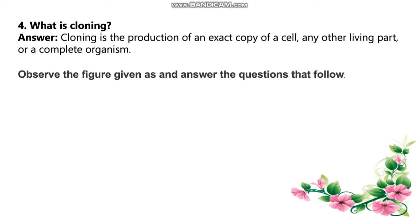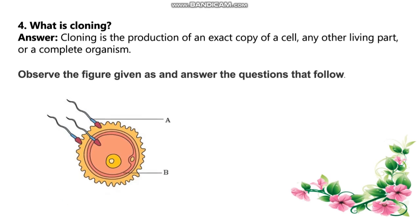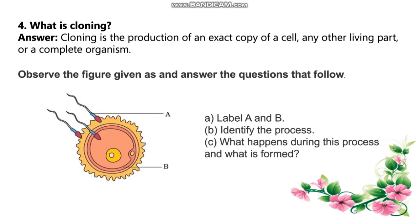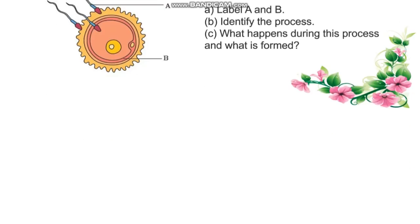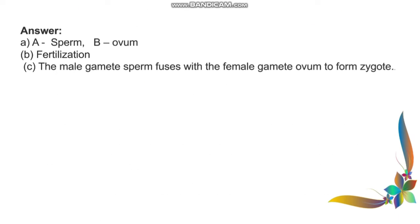Observe the figure given and answer the questions that follow. Label A and B. Identify the process. What happens during this process and what is formed? The answer is: A is Sperm, B is Ovum. The process is Fertilization — the male gamete sperm fuses with the female gamete ovum to form a zygote.